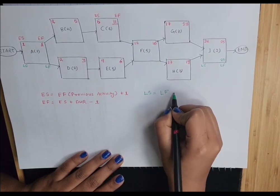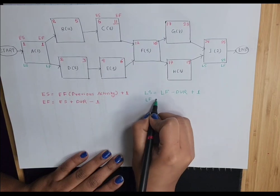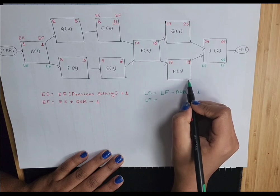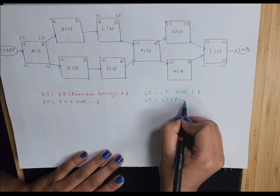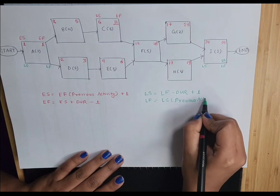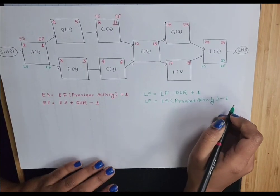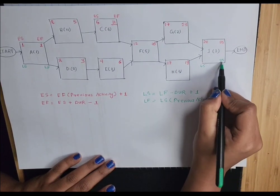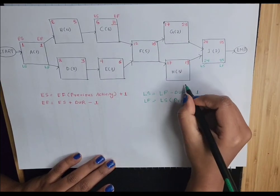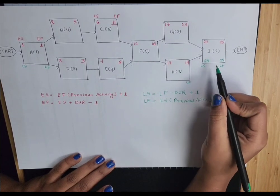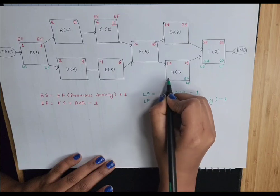The formula for late start is: late finish minus duration plus 1. To calculate late finish for an activity, it is the late start of the next activity minus 1. For example: late start 24, then 24 minus 1 equals 23 for late finish; and 23 minus 3 plus 1 equals 21 for the late start of the preceding activity. Just like this, you calculate for each activity.